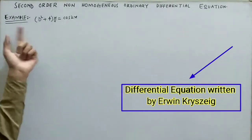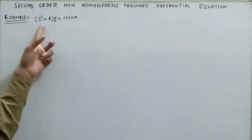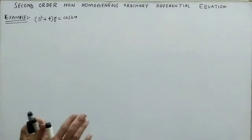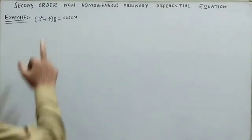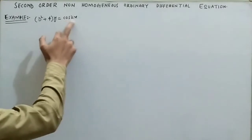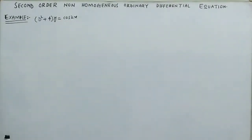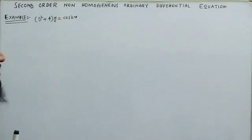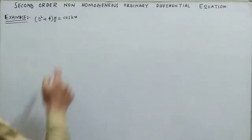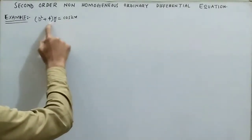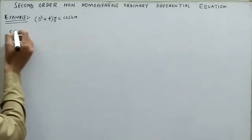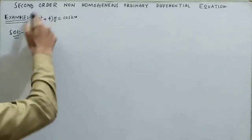Let's discuss the example: d² y/dx² + 4y = cos(2x). Remember, a differential equation is homogeneous if the right-hand side is 0, and non-homogeneous if the right-hand side has one or many terms. Here we have one term, cos(2x), so this is a non-homogeneous differential equation.